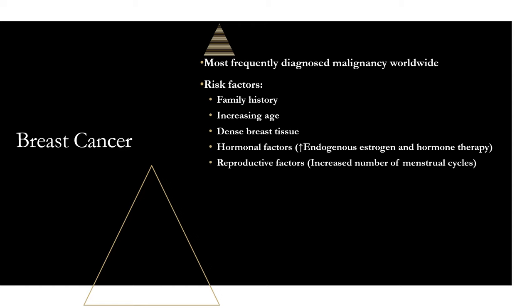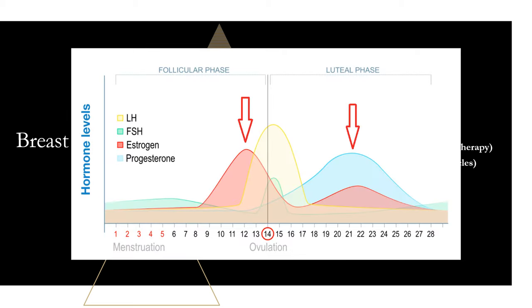Next, reproductive factors — specifically an increased number of menstrual cycles. Anything that makes a woman have more menstrual cycles increases her risk. The more times a woman menstruates in her life, the higher the risk of breast cancer. During the menstrual cycle, there is a surge of both estrogen and progesterone at different stages, leading to longer lifetime exposure to these hormones — more menstrual cycles means more risk of breast cancer.